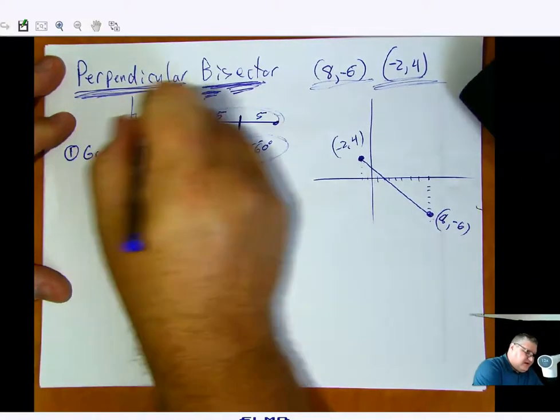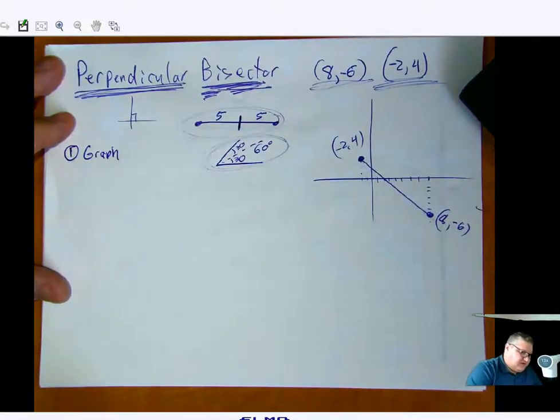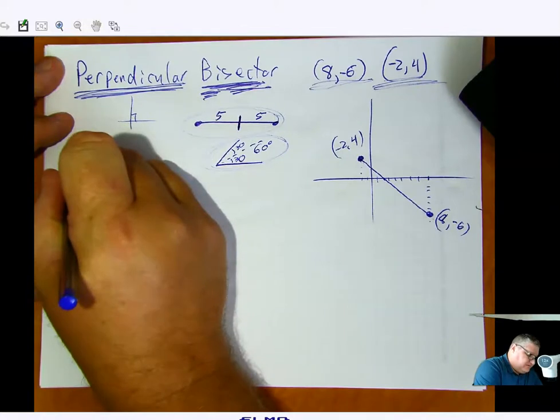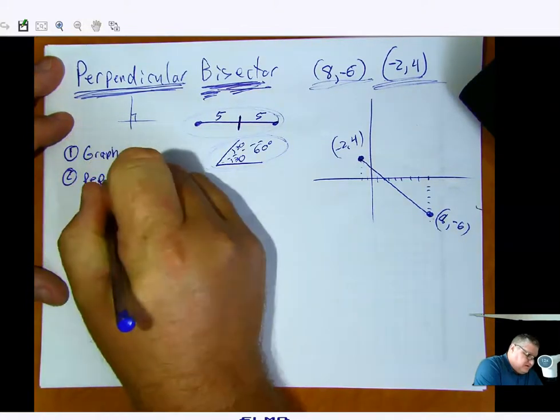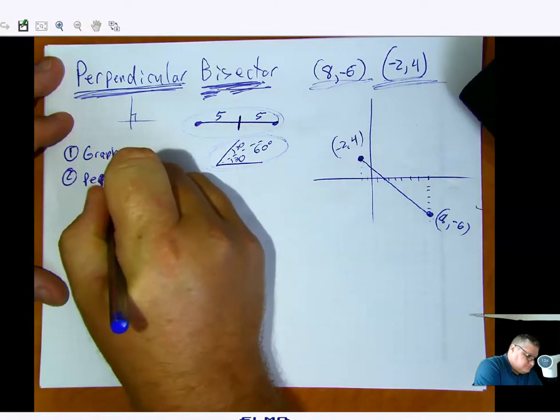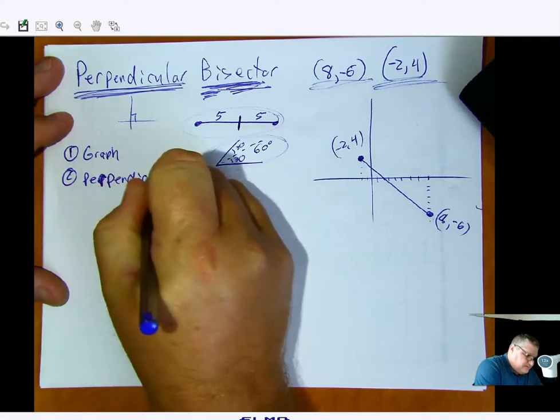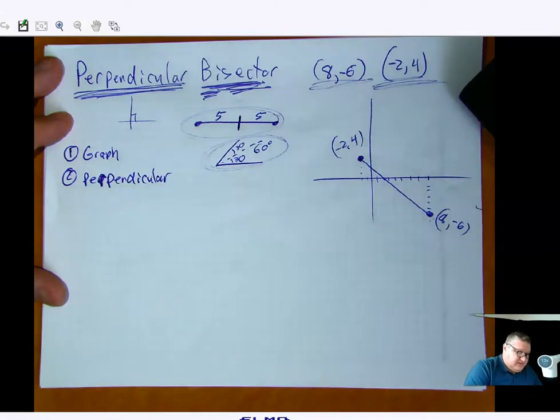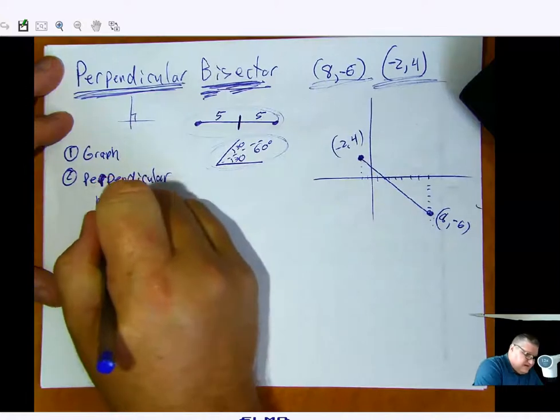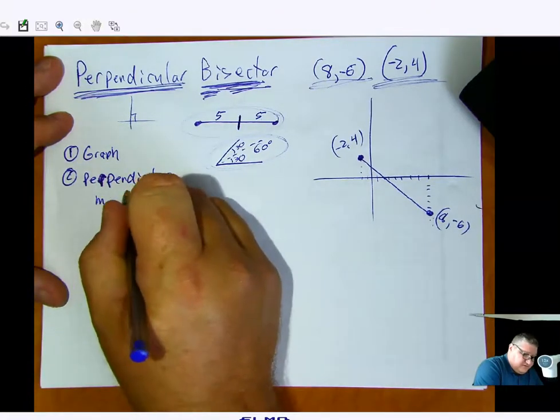Now, if we want a perpendicular bisector, we're going to need two pieces. We're going to need number two, the perpendicular part. So it's literally right in the name. So the perpendicular part means I need to know the slope of the line I have presently.